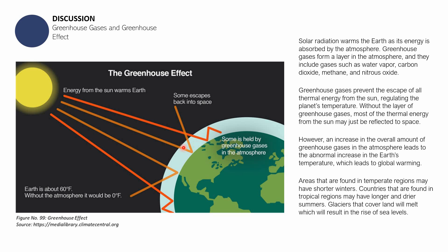The Philippines is very prone to drought, especially now because of climate change. Glaciers and polar ice caps in polar regions will melt, which will result in the rise of sea levels, which will in turn result in the destruction of the habitat of polar organisms.